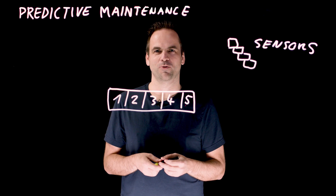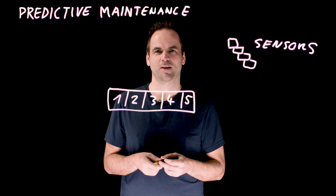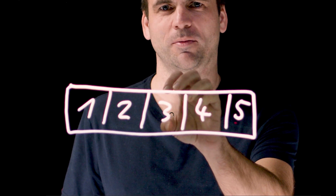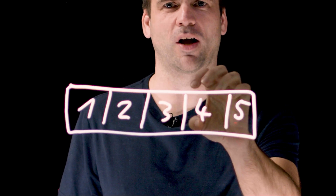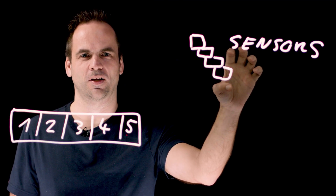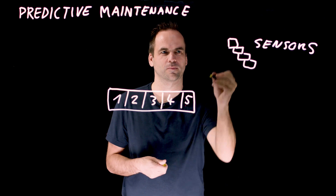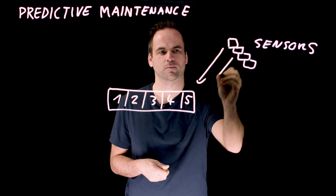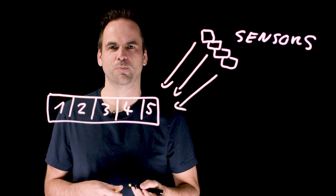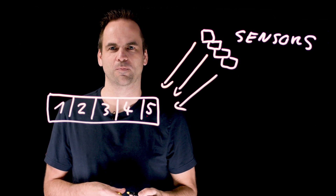We will see three different implementations of how data streaming can help here. In the middle, we see the data streaming part — this is the Kafka log under the hood. On the right side, we see the sensors, which continuously stream data. The Kafka log consumes the data so that you can process it continuously in real time.